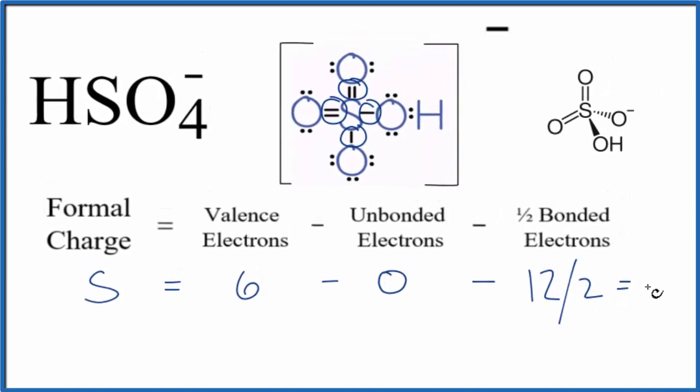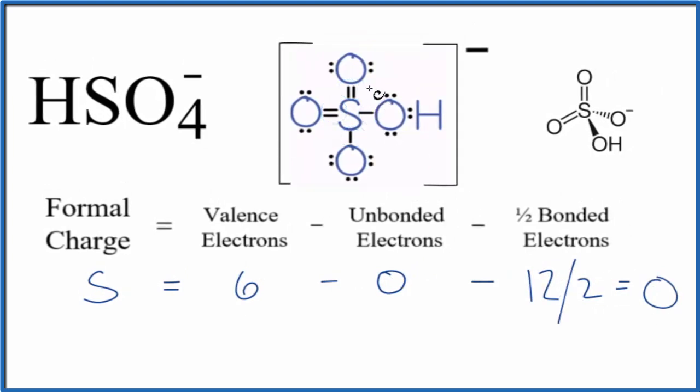So we have six minus zero minus six—that gives us zero. The formal charge on the sulfur in the center is zero.